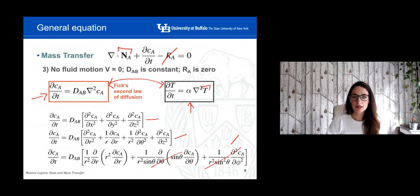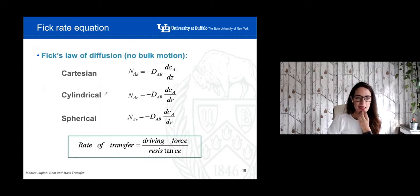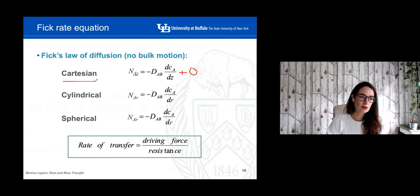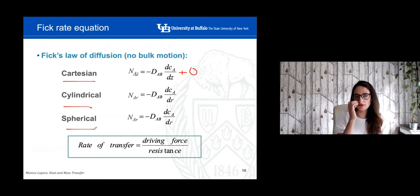Just to refresh your memory — the Fick rate equation, when there is no bulk motion, we don't have to consider the second term. This is expressed as a function of Cartesian coordinate, cylindrical coordinate, and spherical coordinate.